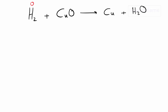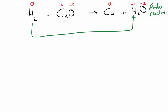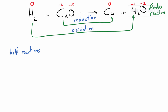Let's have another example: hydrogen reacting with copper oxide to give copper plus water. We start by writing the oxidation numbers for all elements. I will keep a link in the description showing how to find the oxidation number for different atoms. After finding all oxidation numbers, we can see that hydrogen changed its oxidation number and copper also changed its oxidation number, so this is a redox reaction.